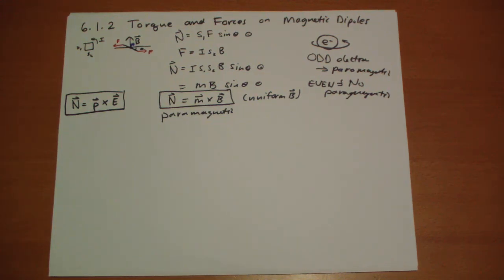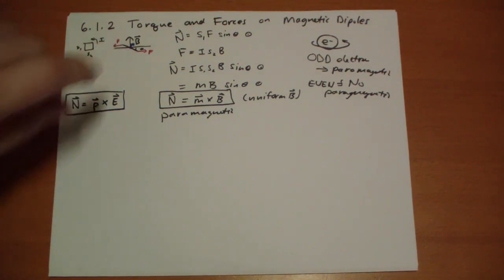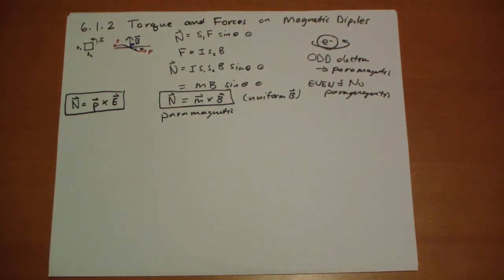So also note that in a uniform magnetic field, the net force, there's no thing pulling the dipole in any direction. For non-uniform magnetic fields, how am I doing on time here? We'll cover non-uniform magnetic materials next.